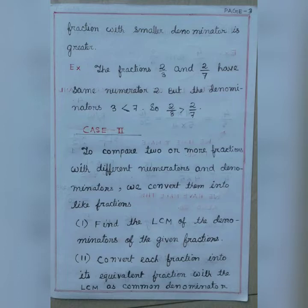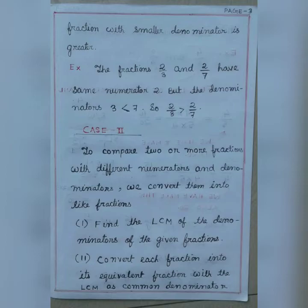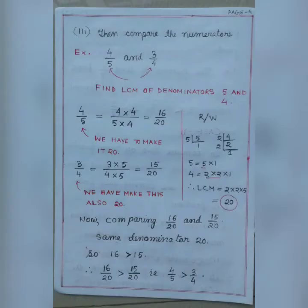Case 2: to compare two or more fractions with different numerators and denominators, we convert them into like fractions. Step 1: find the LCM of the denominators of the given fractions. Step 2: convert each fraction into its equivalent fraction with the LCM as the common denominator. Step 3: then compare the numerators. Let us check this with one example — we have to compare 4 by 5 and 3 by 4.